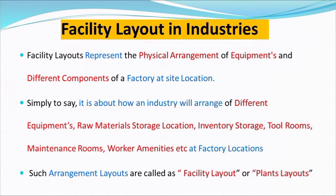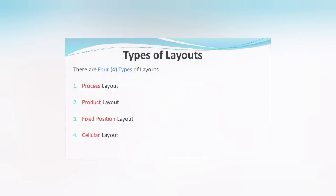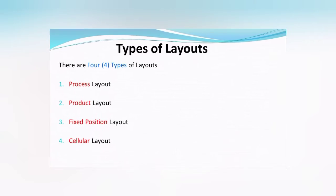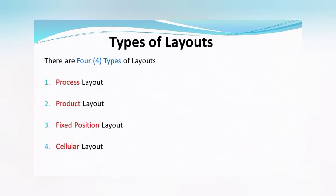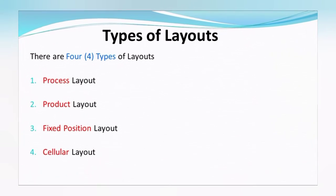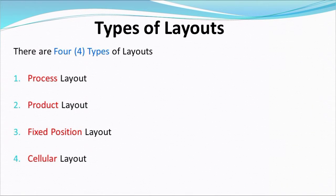Such arrangements are called facility layout or plant layout. Now, types of layout: there are four types. Number one is process layout, number two is product layout, number three is fixed position layout, and number four is cellular layout.